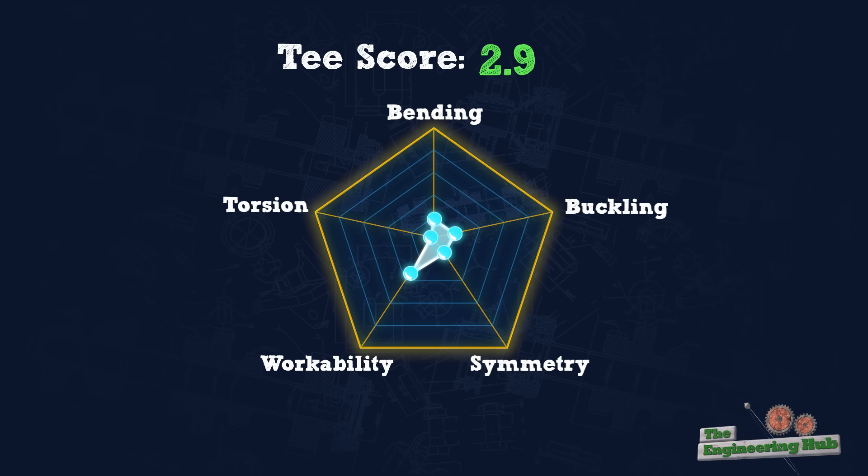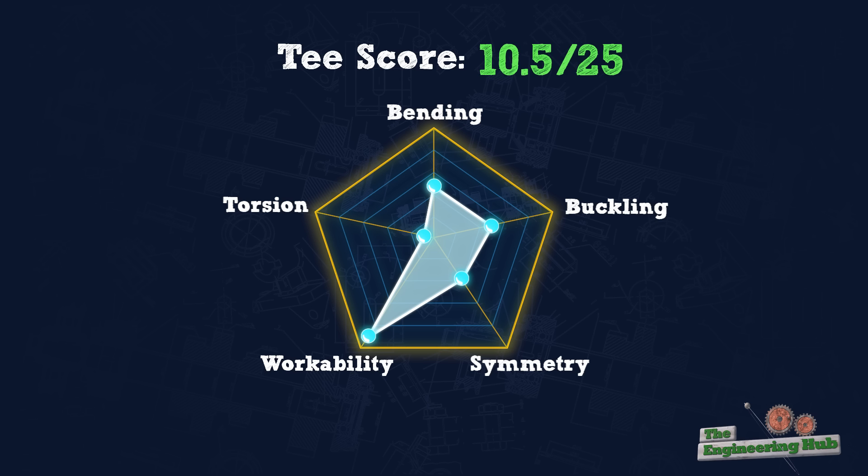Like channels, T-shapes generally share the same flaws as I-beams in terms of torsion and buckling susceptibility as a result of being an open section.